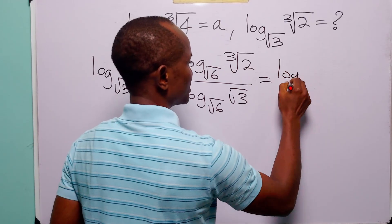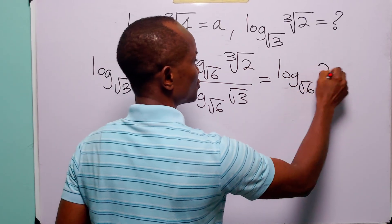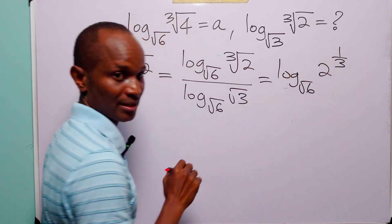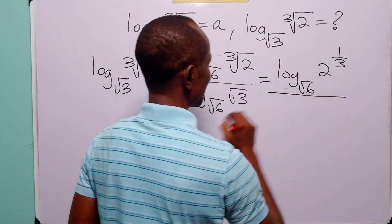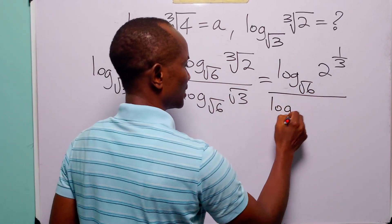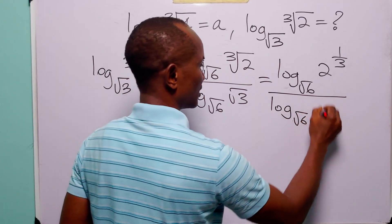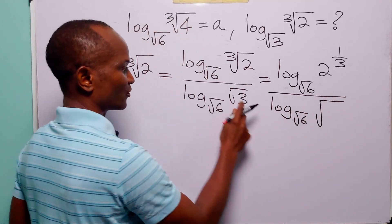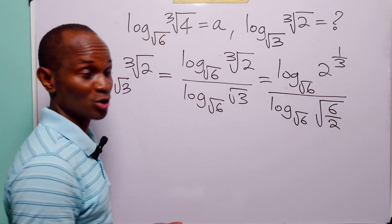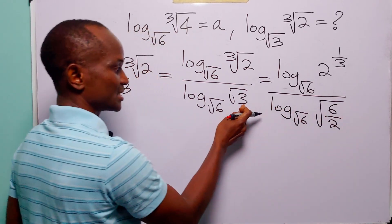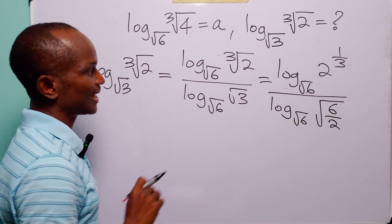We can write this as log to base root 6 of 2 to the power 1 over 3 in the numerator, because of the cube root. In the denominator, we have log to base root 6 of the square root of 6 over 2, because 6 over 2 is equal to 3.